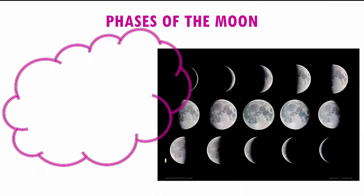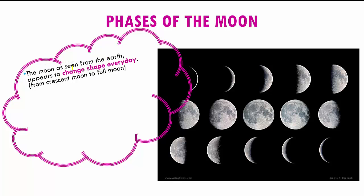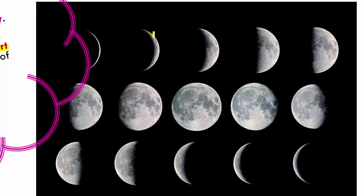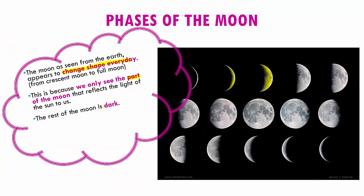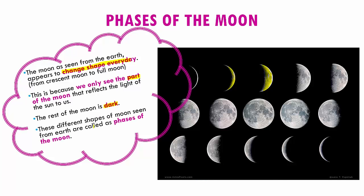Day in and day out when you look at the night sky, you will see different faces of the moon — sometimes the moon is not visible, sometimes it's a crescent, sometimes it's half, and things like that. The moon as seen from the earth seems to be changing shapes every other day. This is because we only see the part of the moon that reflects the sun's light towards us. Whichever part of the moon is reflecting the sun's light, that is what we get to see. The rest of the moon is always dark and we cannot see it.